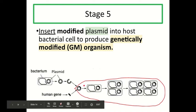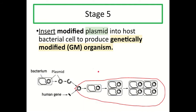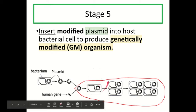Stage five is to insert the modified plasmid into a host bacterial cell to produce a genetically modified organism. You may have heard the term GMO — a genetically modified organism is one that has foreign DNA in it, or DNA not usually found inside it. In this case, the host bacterial cell now has human DNA inside it, which makes it a genetically modified organism.